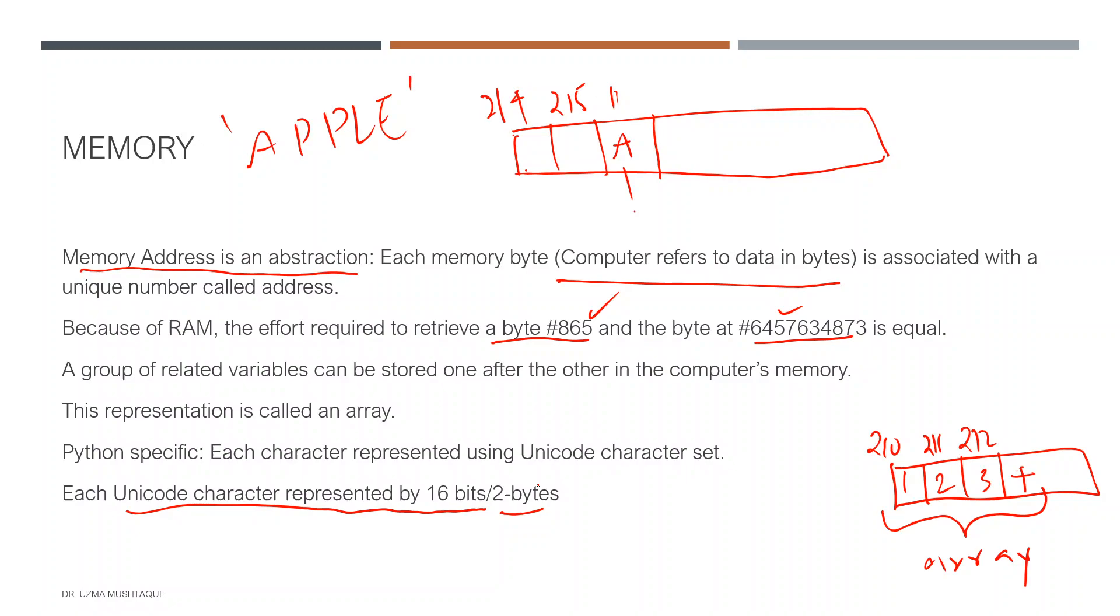A Python string embedded as an array of characters in computer memory is such that a single character will be represented by two bytes. For example, 'a' will be stored in two consecutive bytes—216 and 217—and then 'p' again in 218 and 219, and so on. However, at a higher level, these are represented as 0, 1, 2, 3, 4. This is how we represent the position.